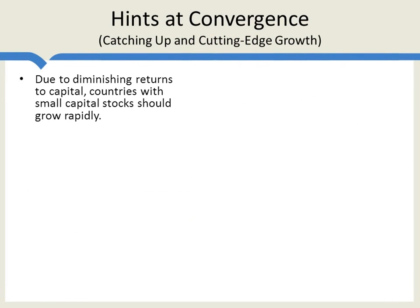We've only just begun to develop the model, but already there are hints at ideas we'll develop in future lectures. Due to diminishing returns to capital, countries with small capital stocks should grow rapidly. If a country's capital stock is really low, the productivity of capital ought to be high — even a little investment ought to generate a big increase in output, a high growth rate. China may be one example: they are literally adopting the first tractors, and those first tractors are increasing agricultural output tremendously — a high growth rate. Across all kinds of sectors, China is adding its first units of capital, and that is growing the economy rapidly.